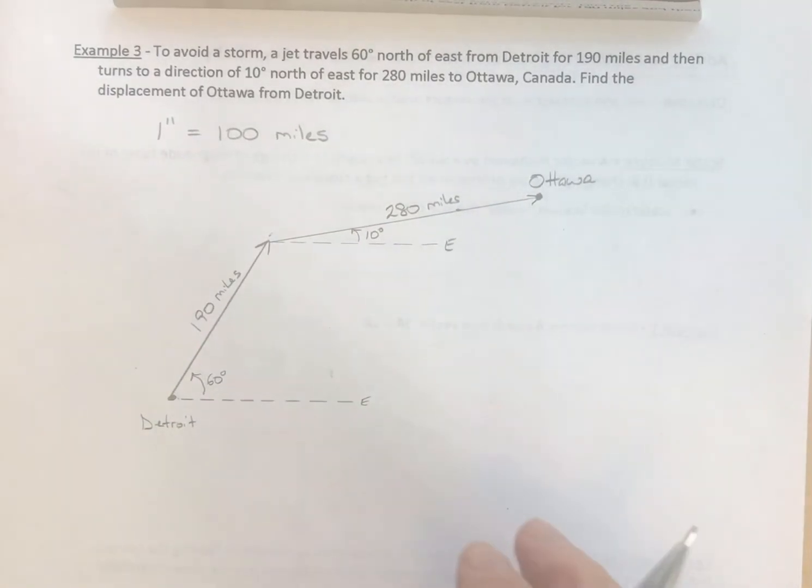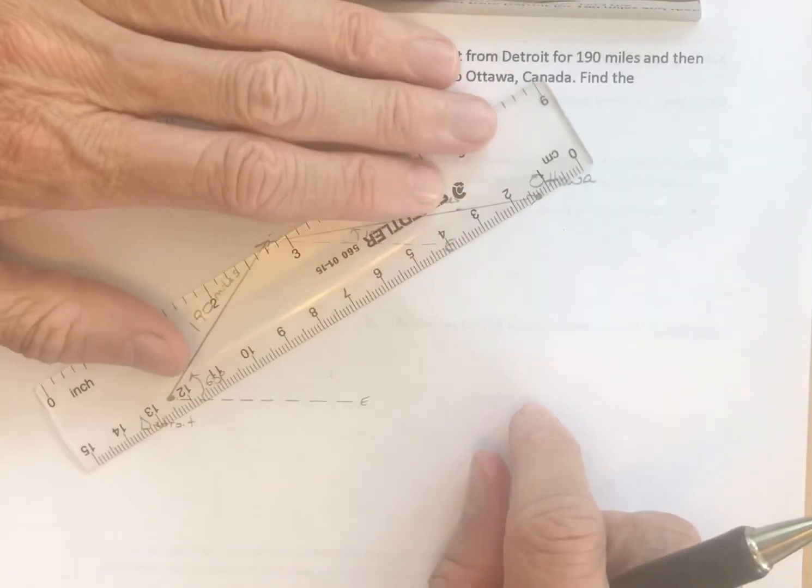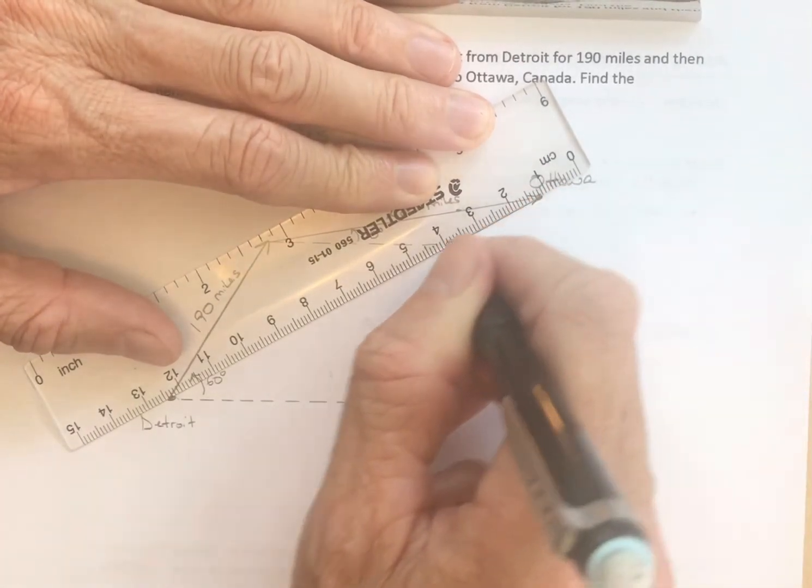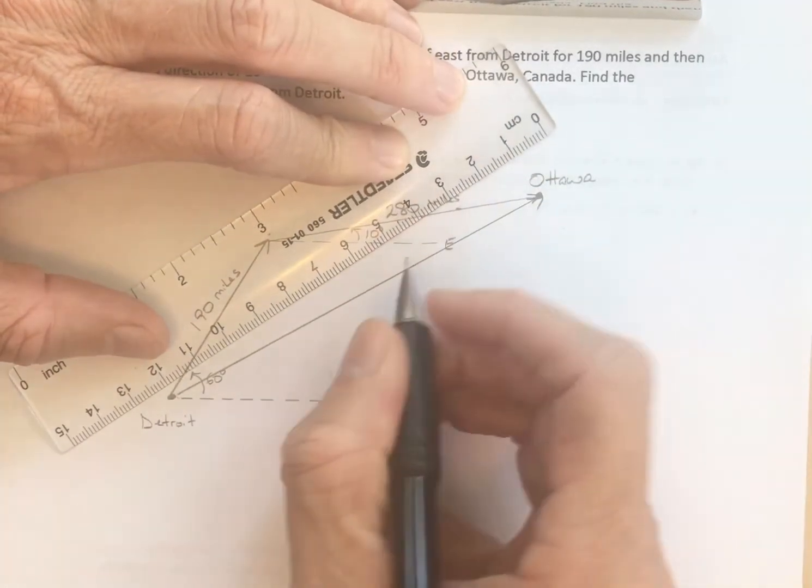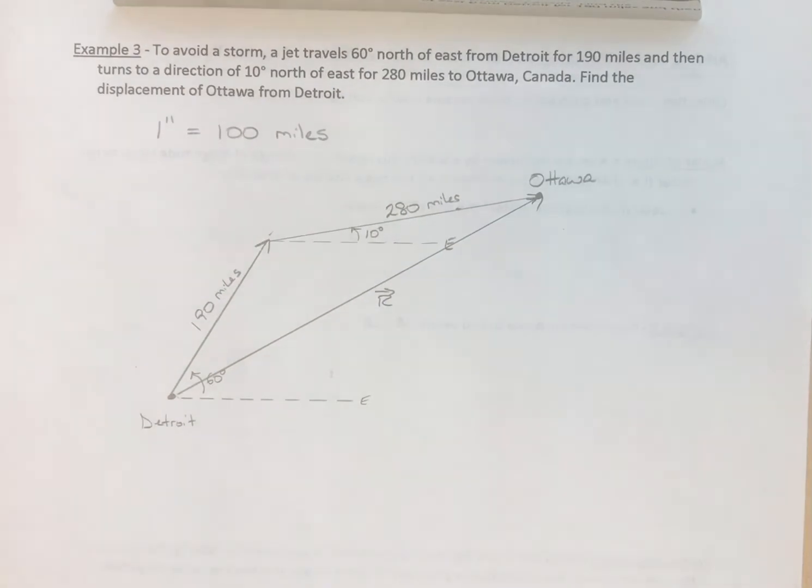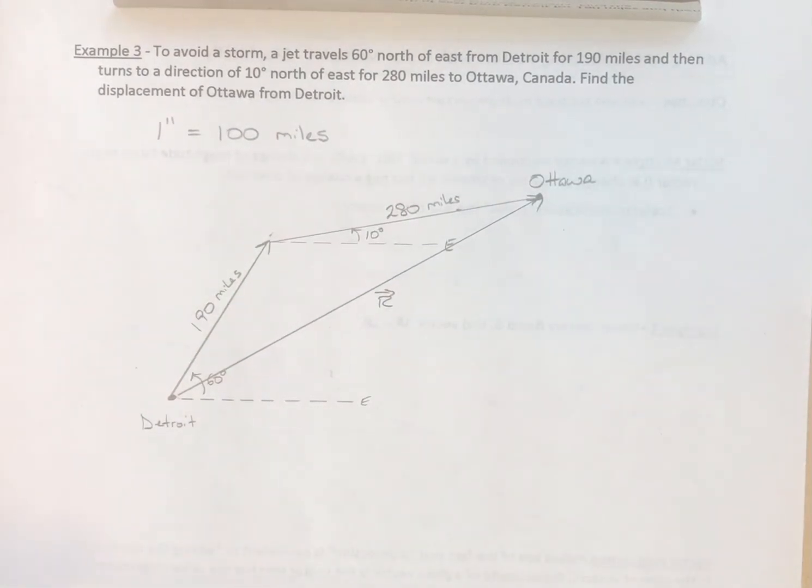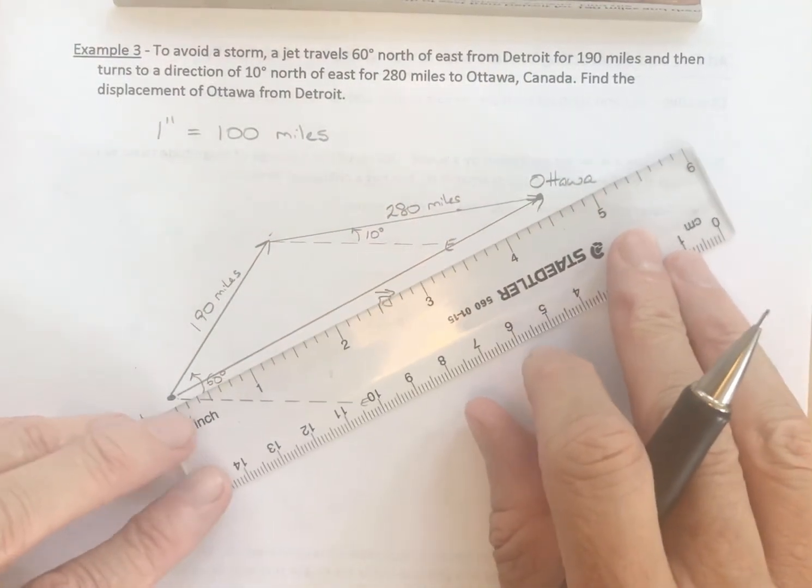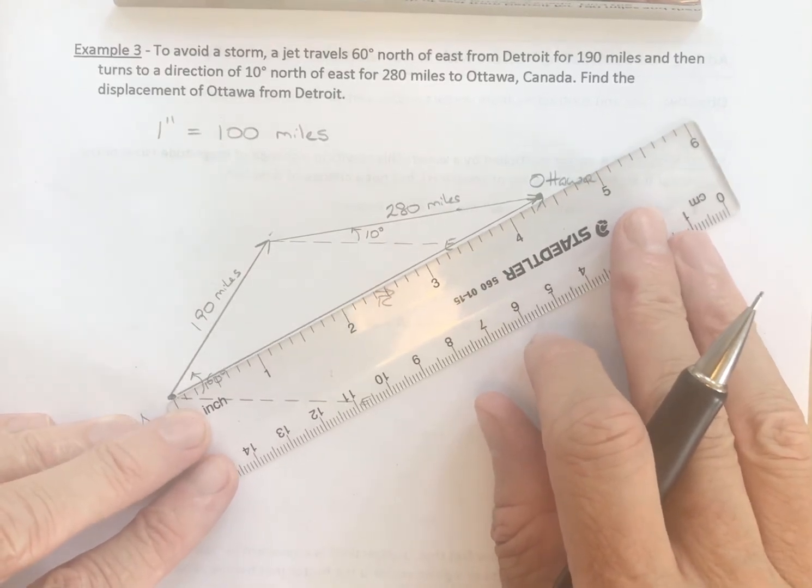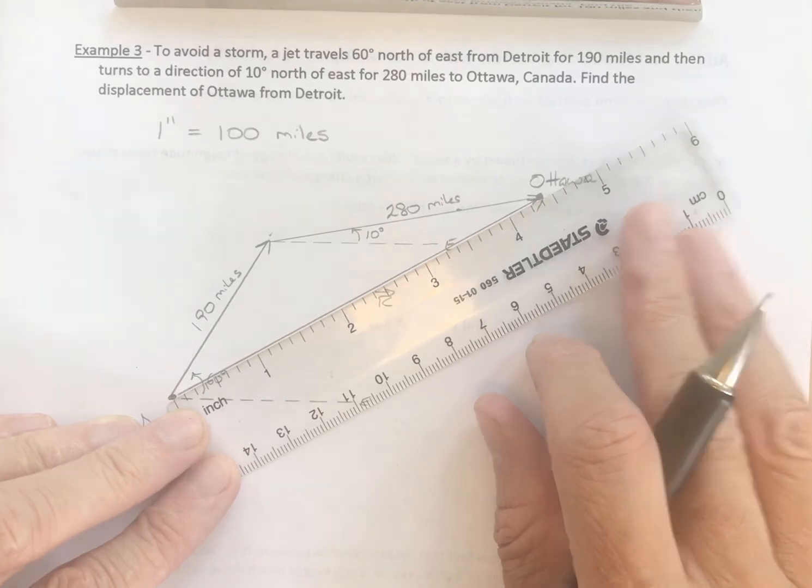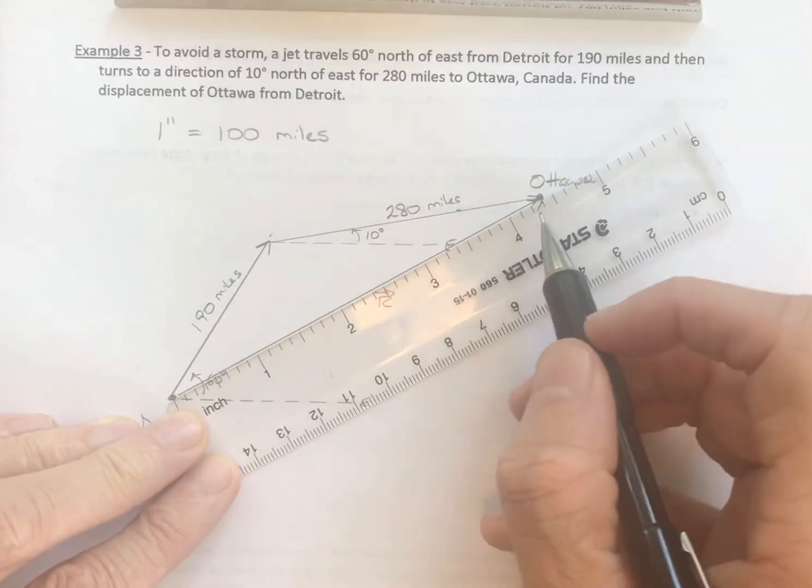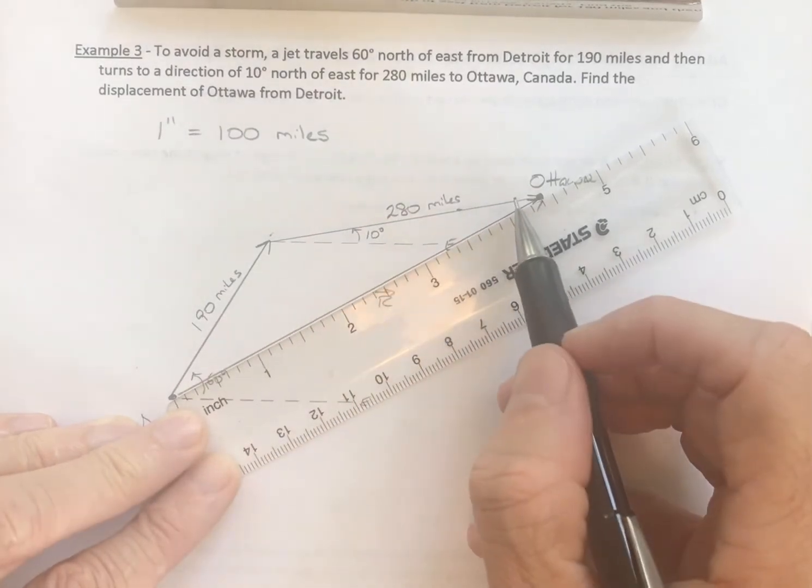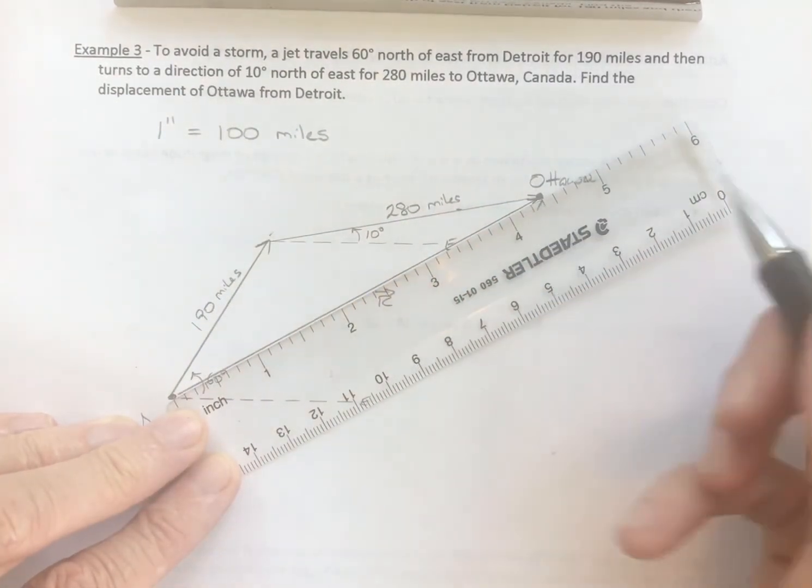Find the displacement of Ottawa from Detroit. So this is our resultant vector right here. From head to tail. And there it is. And this is our resultant vector. And the question is, how far is that? And what is its direction? Well, 1 inch is equal to 100 miles. So we can see here that 100, 200, 300, 400 is between 400 and 500 miles, a little less than 450. And again, we're using a ruler. We haven't been overly precise. We've approximated.